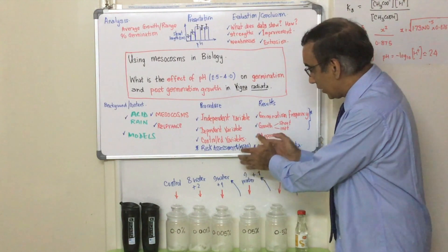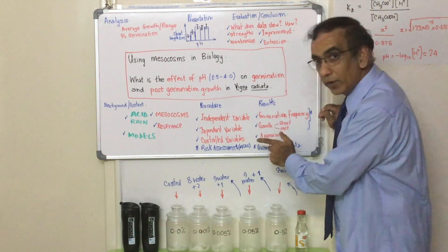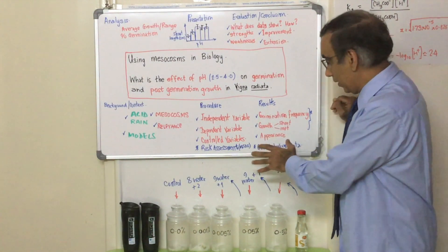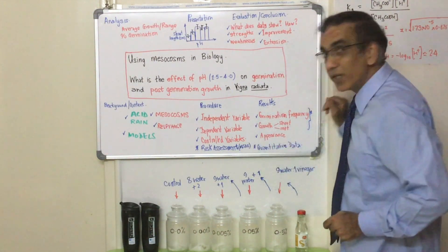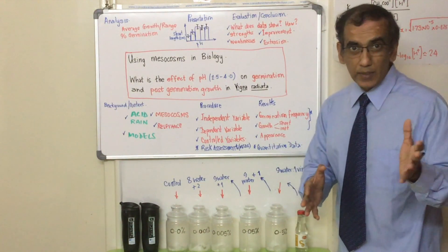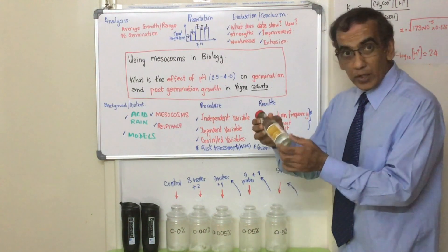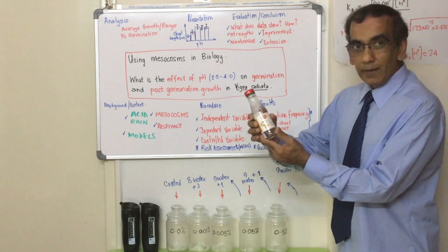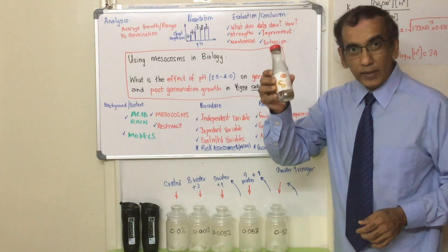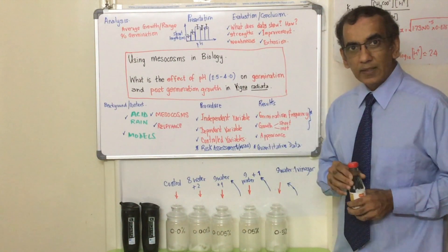Moving to the rest of the procedure, after talking about the independent, the dependent, and the controlled variables in great detail, you need to of course include a risk assessment in all of these IB group 4 subjects and of course for ESS as well. You need to include your risk assessment, which is why I've shared with you guys the MSDS sheet for vinegar, which is the most significant ingredient that we have in this activity.